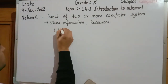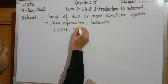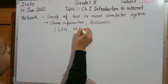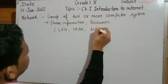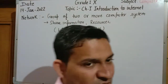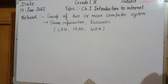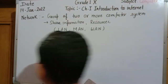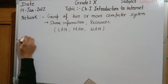Generally, a network can be designed in different forms. You may have heard about LAN, MAN, and WAN. LAN is your Local Area Network, MAN is Metropolitan Area Network, and WAN is Wide Area Network.